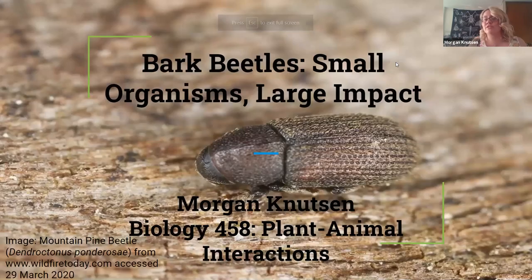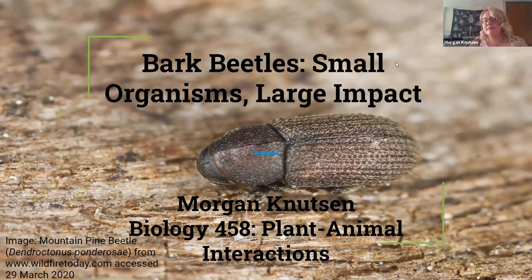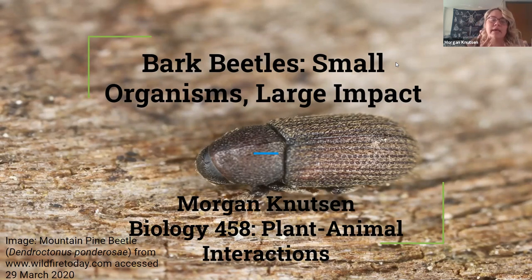I'm going to start this by saying it is a thousand degrees in my dorm room, so I apologize if I take a drink. I have not turned the air on in here and it's hot. I'm going to start by introducing myself. My name is Morgan Knutson. I am a senior here at WIU with a double major in environmental biology and zoology. After I graduate this semester, I'm going to be attending the University of Kentucky getting my master's in entomology. What I'm going to be studying at the University of Kentucky is bark beetles and how to manage them. My presentation is on bark beetles and how they impact the ecosystem and us.